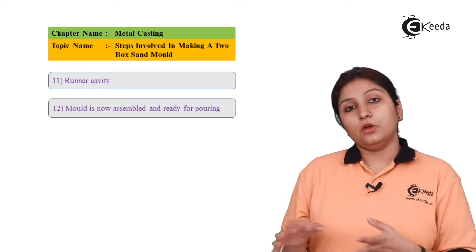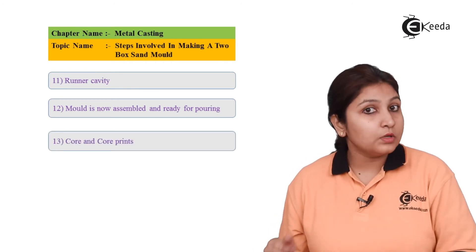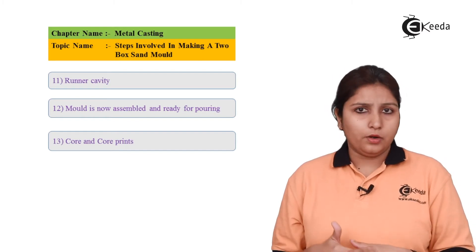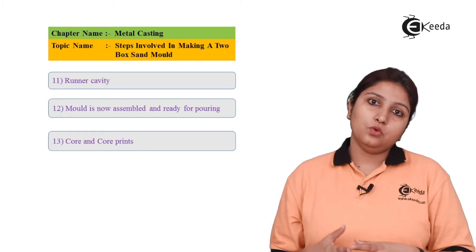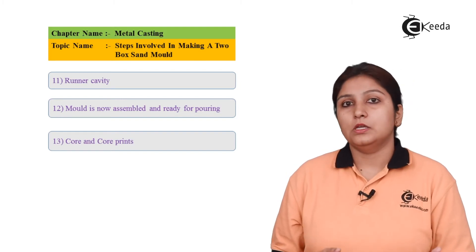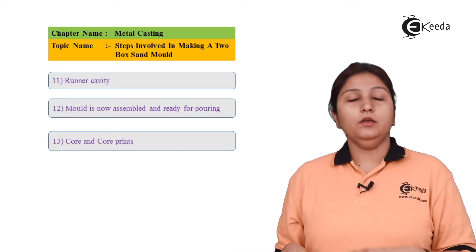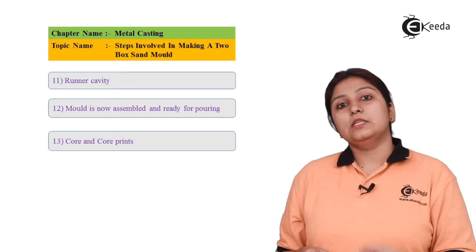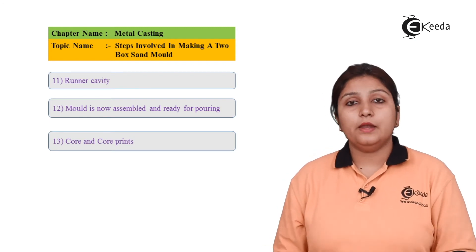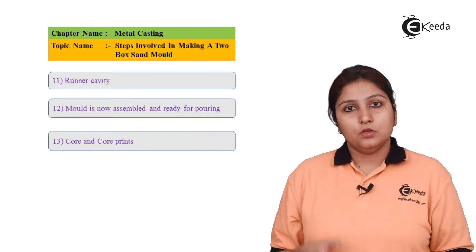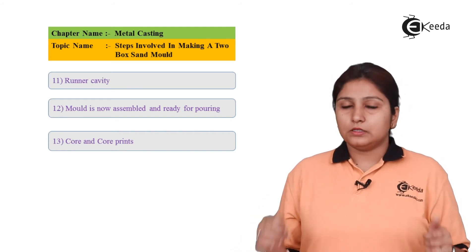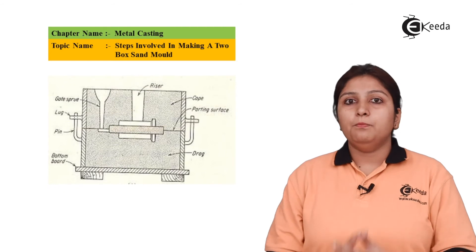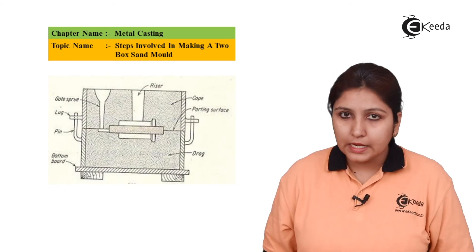In this way our two-box mold becomes ready for your casting process. If a core is needed in that casting, then a core slot is made, a core is added in that slot, and a core print is there for support. A core helps in making a complex object; when a simple object is to be made, no core is required. After all the assembly is done, it is clamped, all excess particles are removed, and the mold box is ready for pouring of the metal.